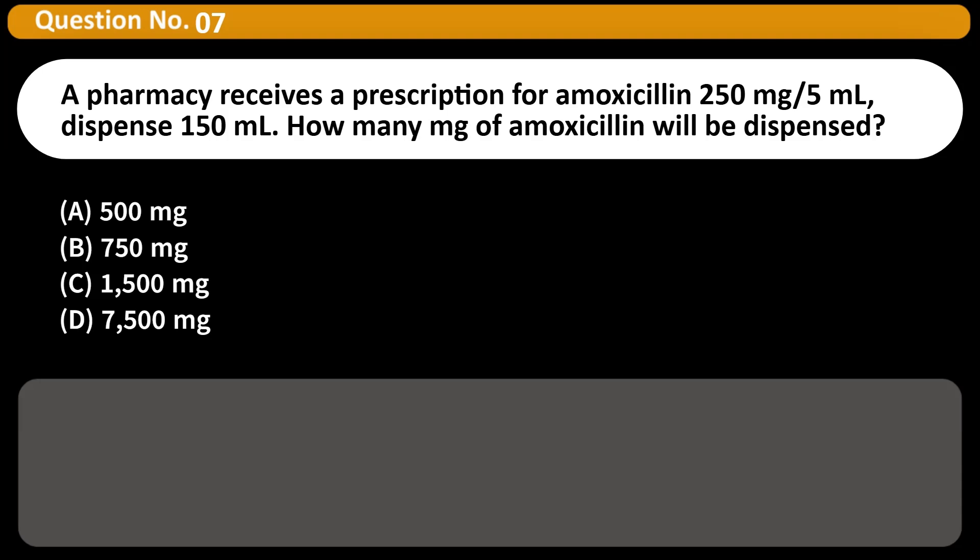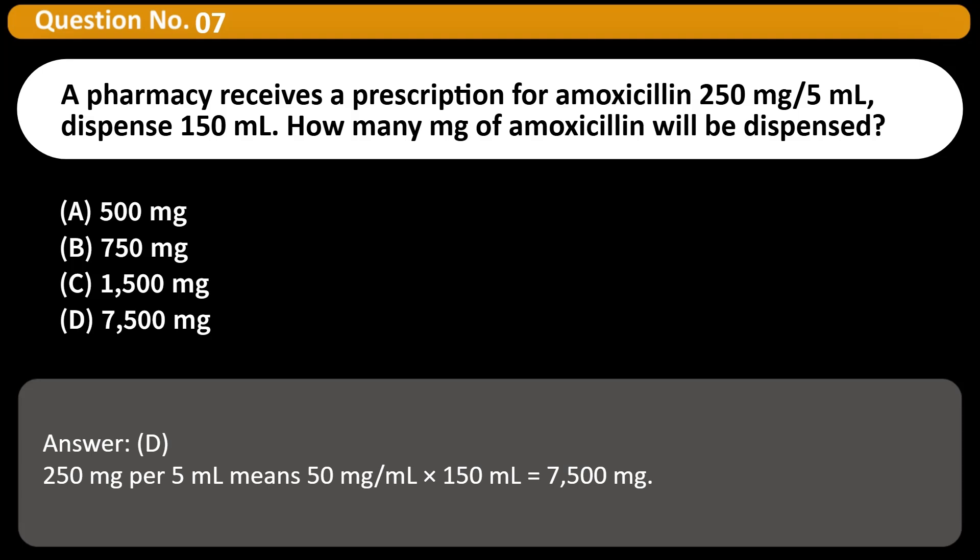A pharmacy receives a prescription for amoxicillin 250 mg per 5 mL, dispense 150 mL. How many mg of amoxicillin will be dispensed? A. 500 mg. B. 750 mg. C. 1,500 mg. D. 7,500 mg. Answer: D. 250 mg per 5 mL means 50 mg per mL, times 150 mL equals 7,500 mg.